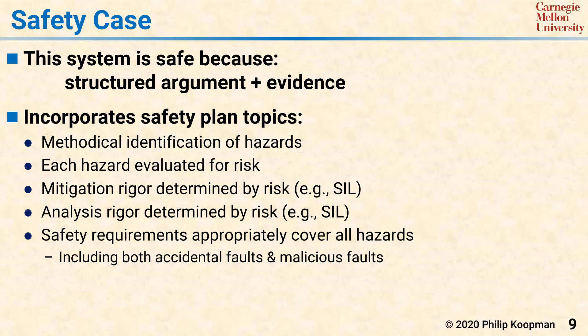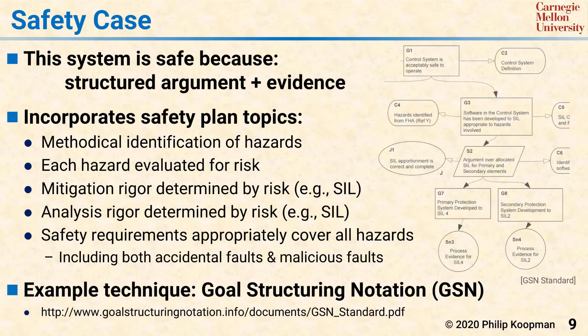While there are a number of approaches to creating a structured safety case and tools to support them, an emerging tool worth considering is Goal Structuring Notation, or GSN. At a high level, the general idea of GSN is to take a fault tree and annotate that fault tree with the argument and evidence required to demonstrate that the hazard at the root of the fault tree has been adequately mitigated.